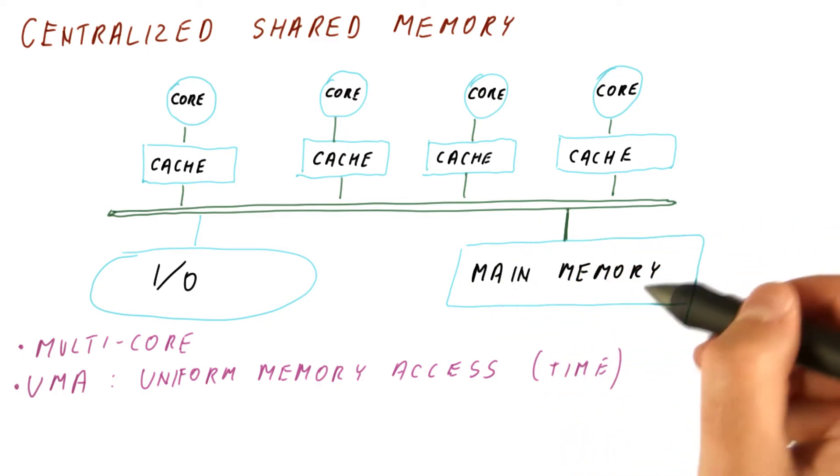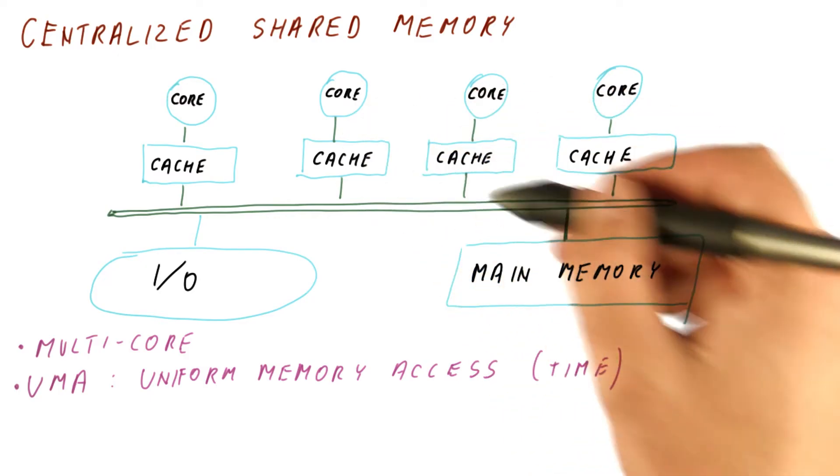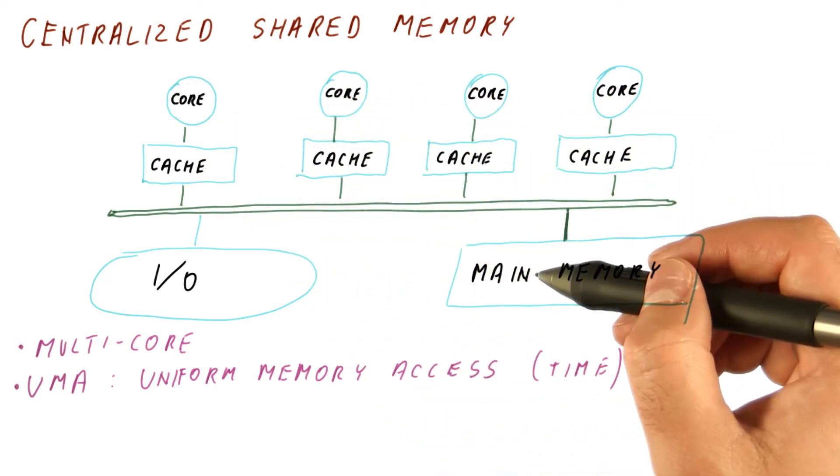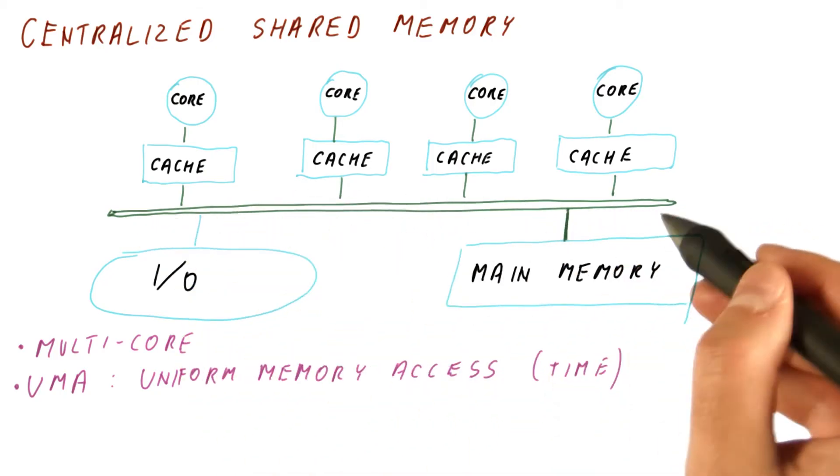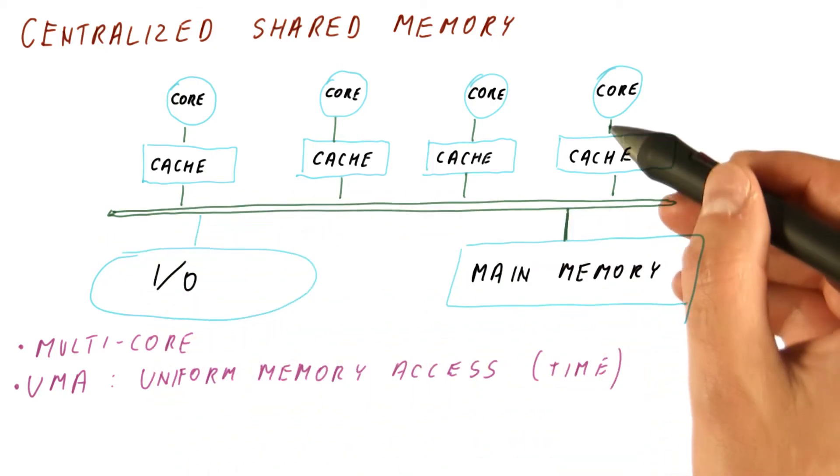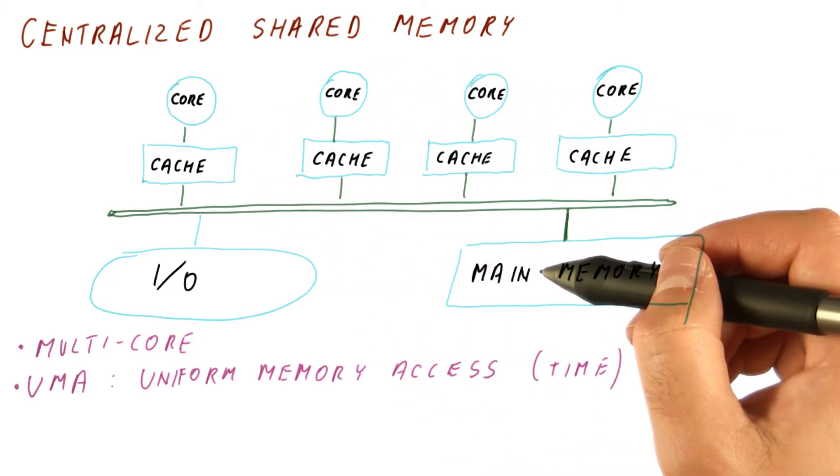Why? Well, because this main memory is at the same long distance from all of the cores. Yes, it can be slightly closer to some of them. But because they're all connected to it in the same way, the memory really is about as bad to access from any one of them.